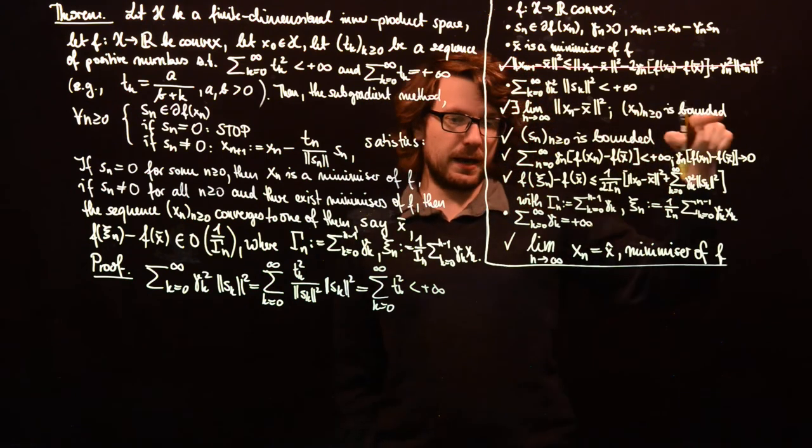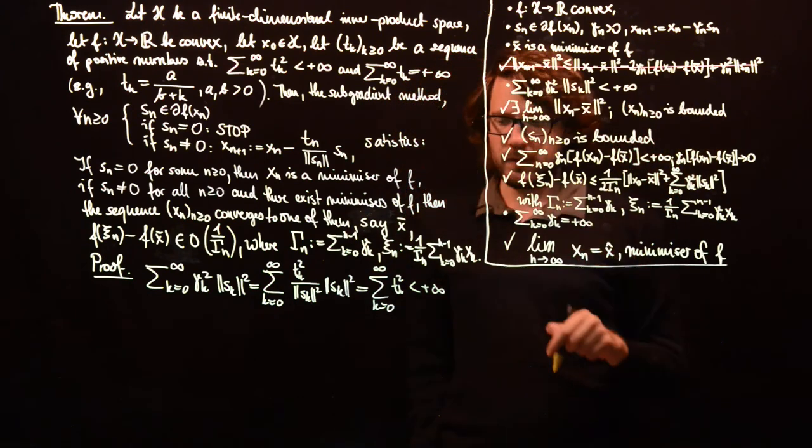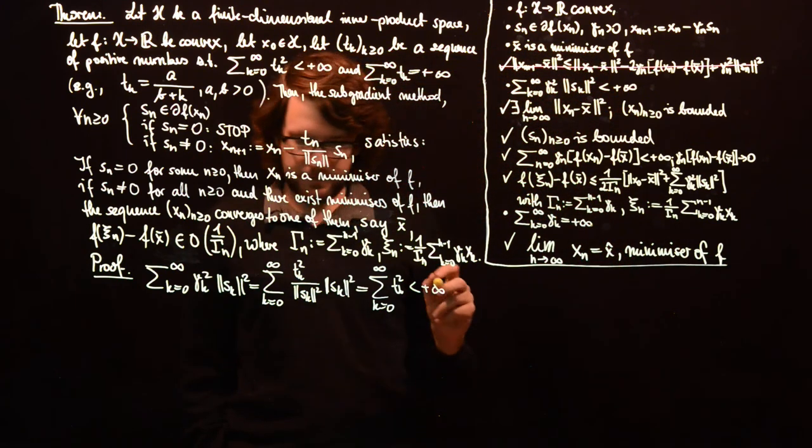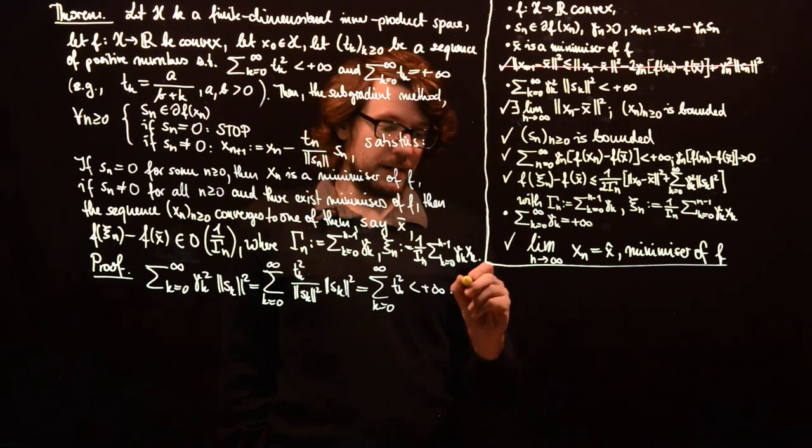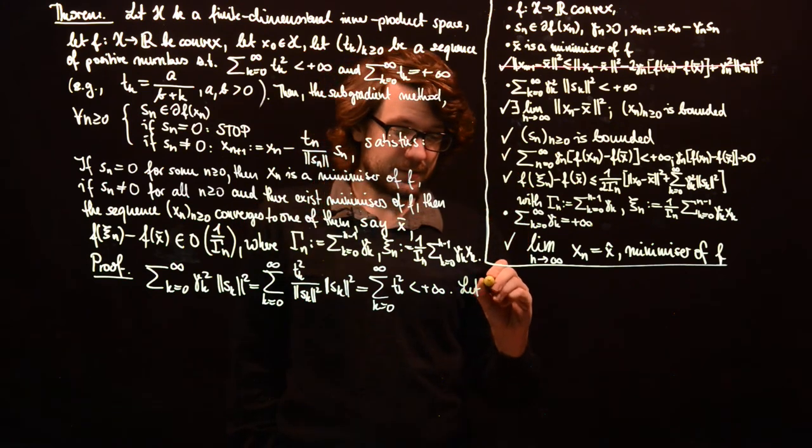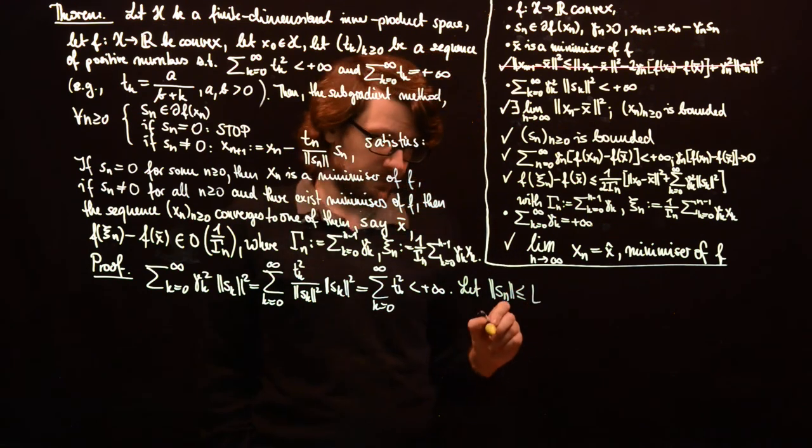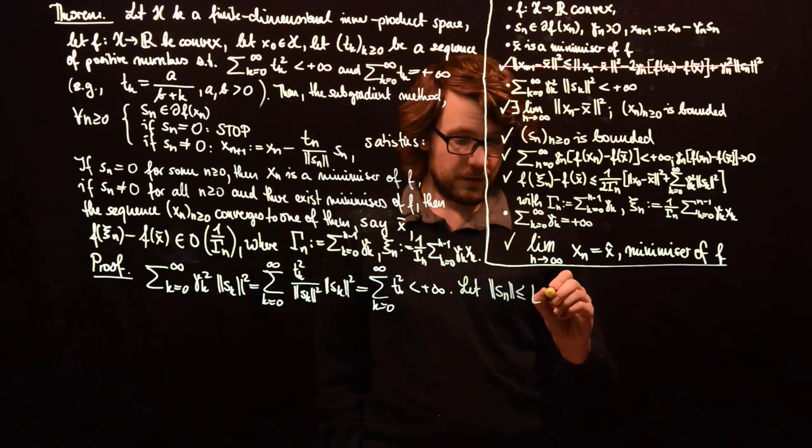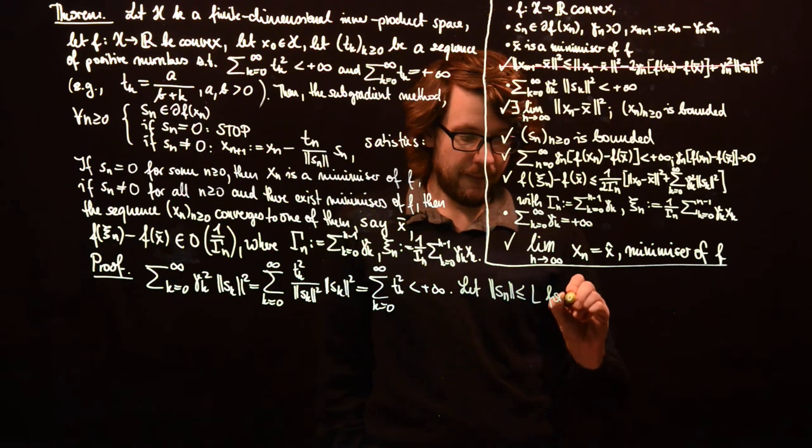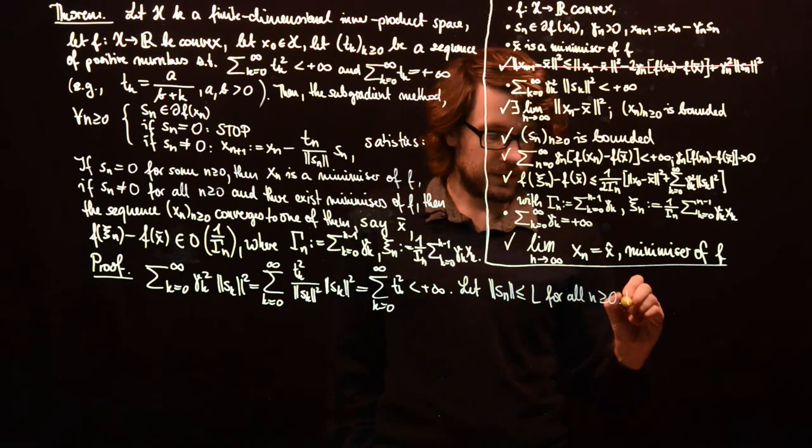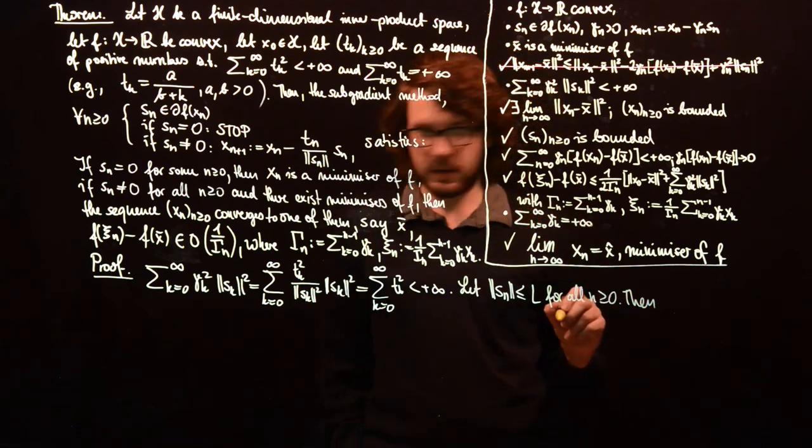And our assumption was that the sequence is summable. So this is clear. And the last assumption we had was that the sum of gamma_k should be plus infinity. So here we use the boundedness of the subgradients. So let norm of s_n less or equal than L for all n greater or equal to 0.